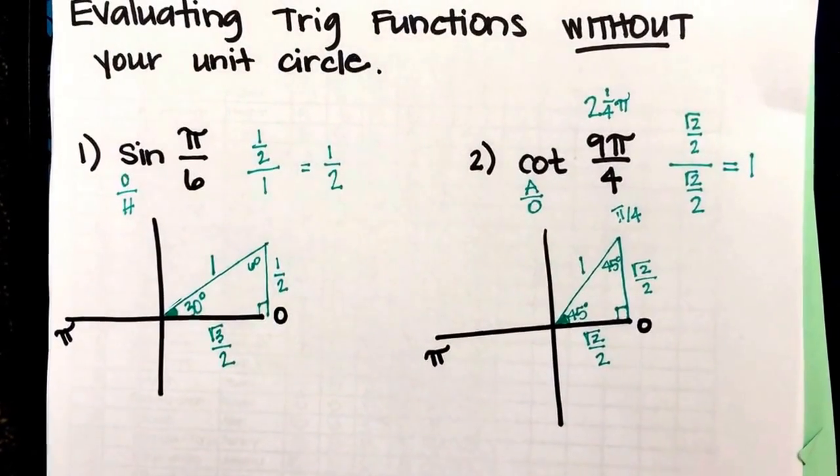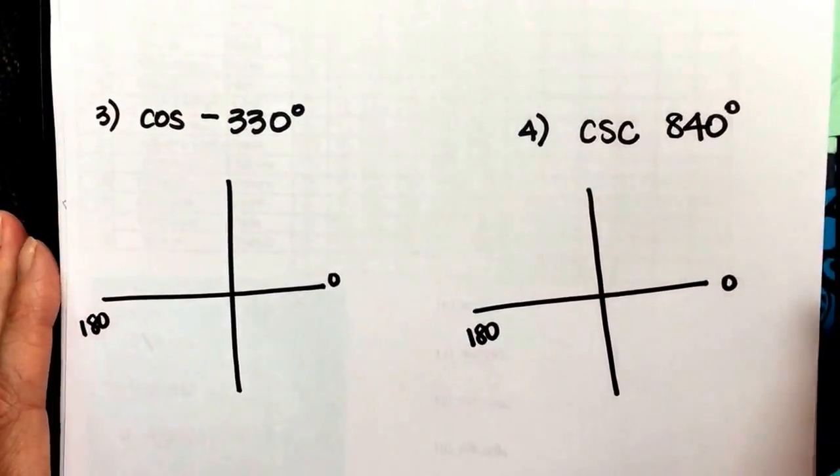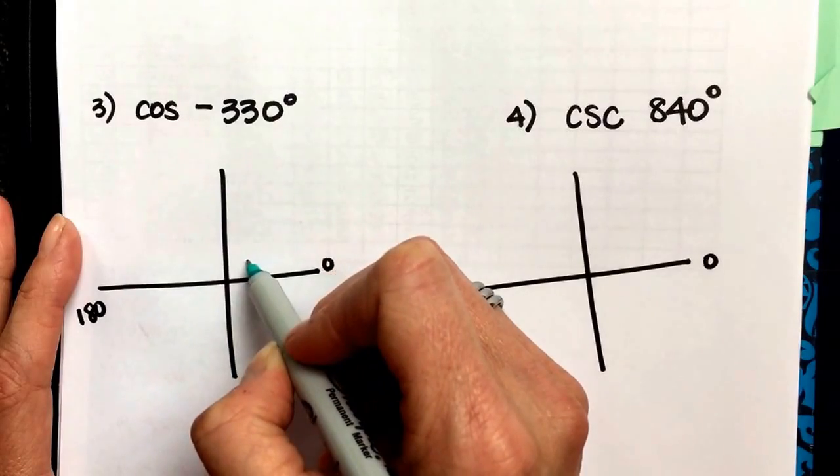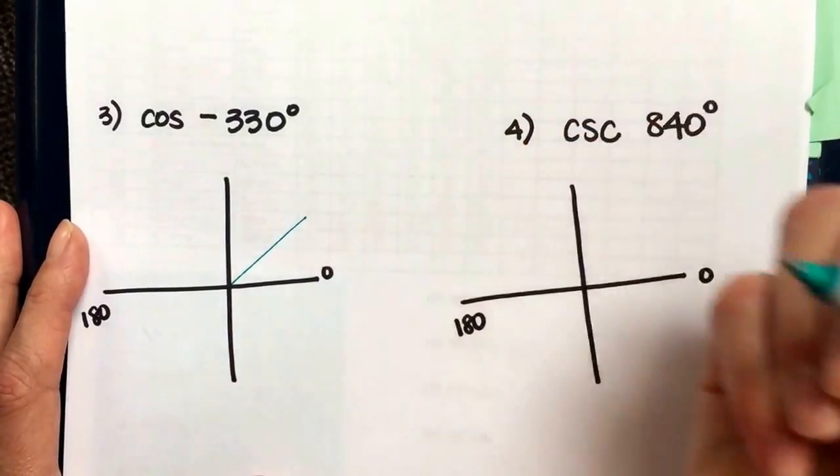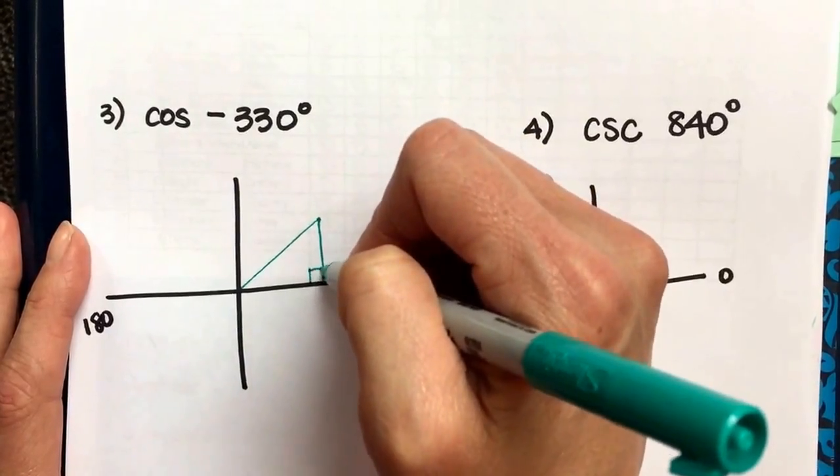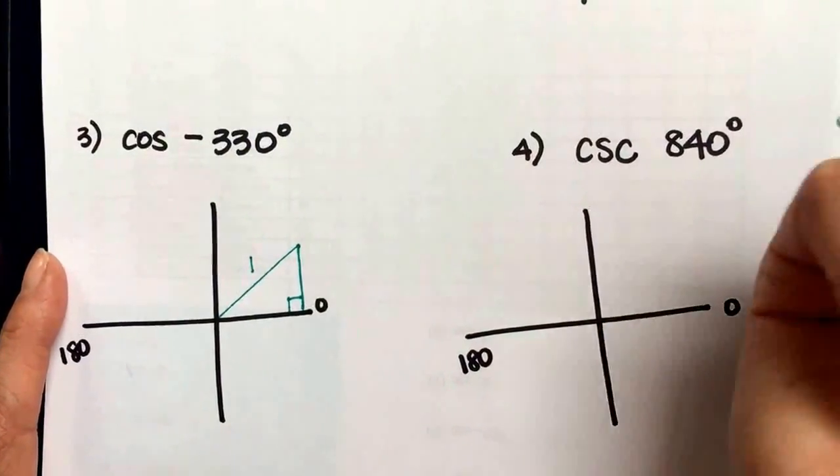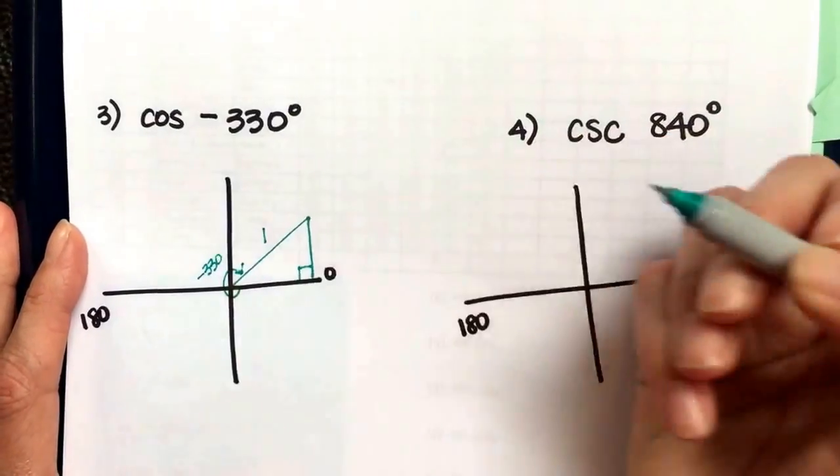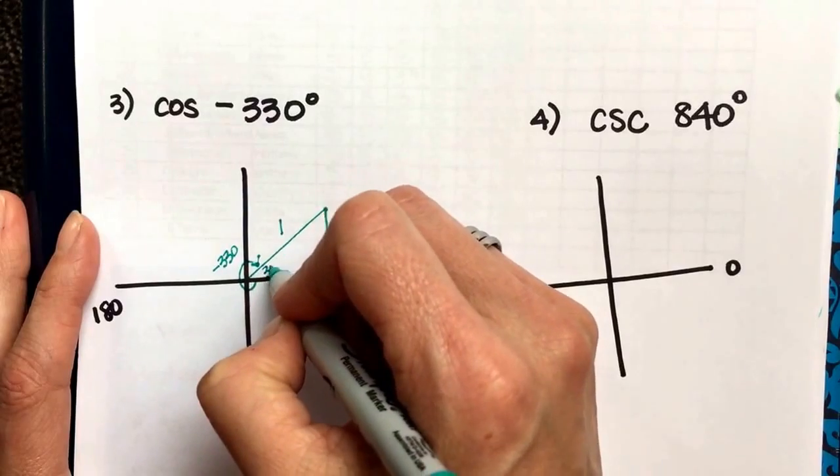The second two are measured in degrees. So same process except they're measured in degrees. First one, negative 330. So negative means that starting at 0, I'm going to go down. If I went all the way around, that would get me to 360. So I'm just shy of that. Draw your line to your x-axis, make your triangle. The hypotenuse is 1 again. So if this is 330 in the negative direction, but I've gone 330 degrees, and all the way to here would be 360, then my reference angle, the distance between the two, is 30 degrees.